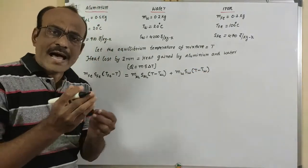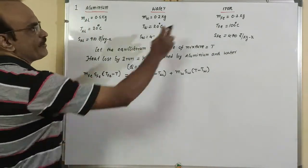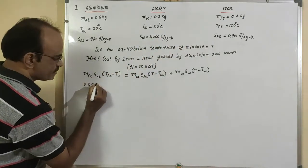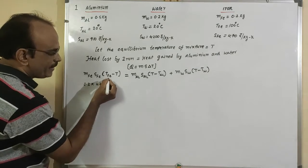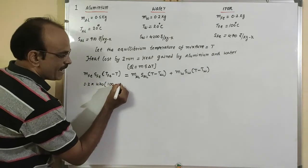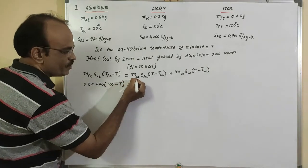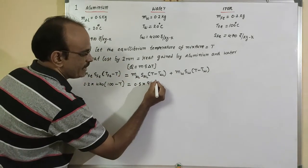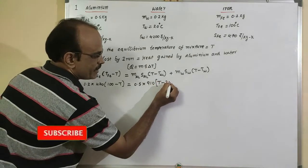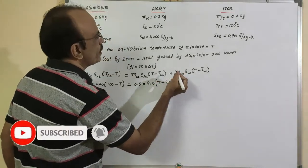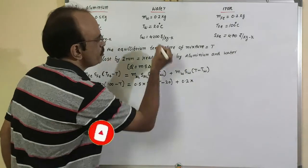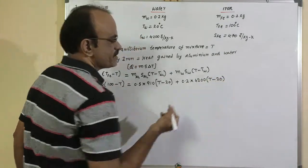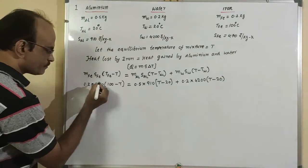Substituting values: 0.2 × 470 × (100 − T) = 0.5 × 910 × (T − 20) + 0.2 × 4200 × (T − 20).